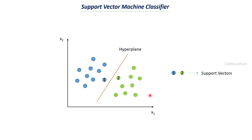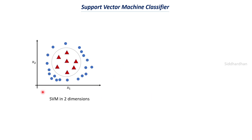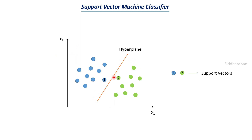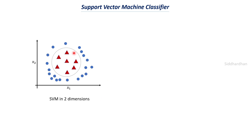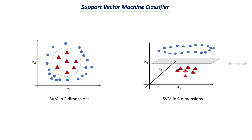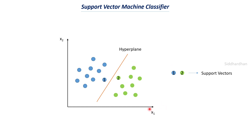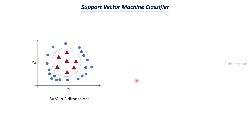It is not always possible to separate data points into two classes when we only have two dimensions. For example, if we have a two-dimensional plot with blue circle data points and red triangle data points that are intermixed, we cannot draw a line to separate them. In such cases, one solution is to increase the dimensions. If we move to a three-dimensional structure, there is a possibility that we can separate these data points. Sometimes with two dimensions we can easily separate them, but it is not possible all the time, so we may need to increase our dimensions.